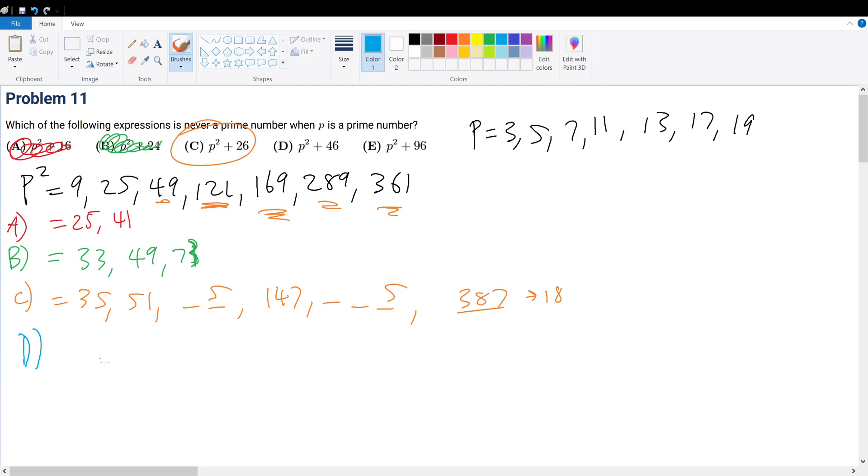Plug in 9. We get something ends in 5. 25, we get 71. 71, boom. That's a prime. D is out.